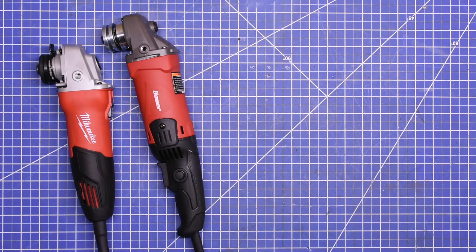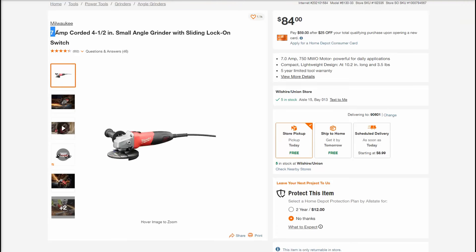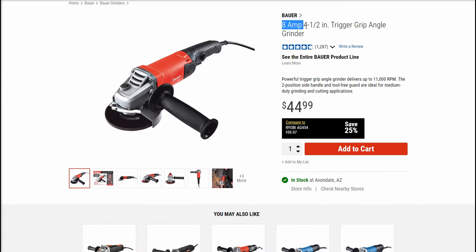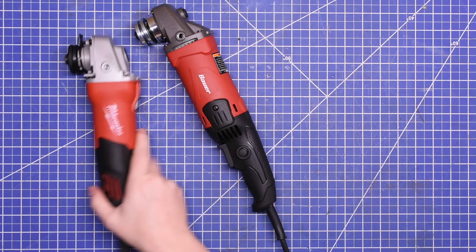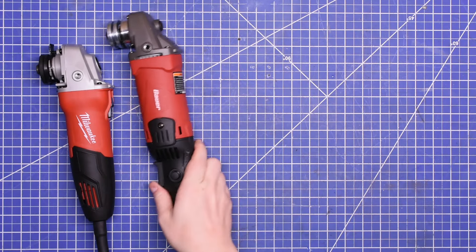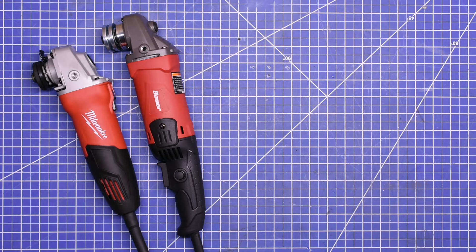But how powerful is a, for instance, quote-unquote seven amp corded four and a half inch angle grinder from a name brand like Milwaukee? If you save a few bucks by shopping at Harbor Freight, will buying an eight amp model then make more power for less money since eight is in fact higher than seven after all?